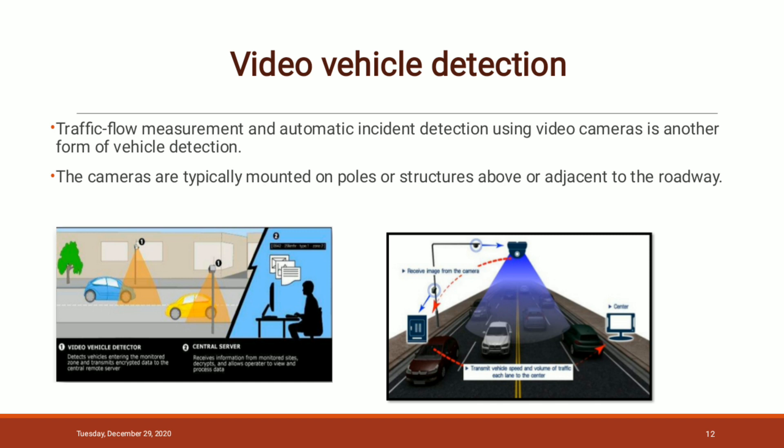The next one is the video vehicle detection method. With the help of video cameras, traffic flow measurement and automatic incident detection is done. As shown in this figure, the video camera detects the vehicle entering the monitored zone, after which it transmits encrypted data to the camera remote sensor. The data is then received by the central service, which decrypts the data and allows operators to view the processed data.